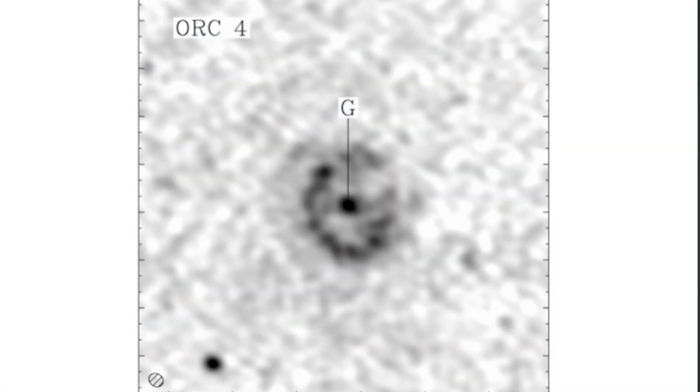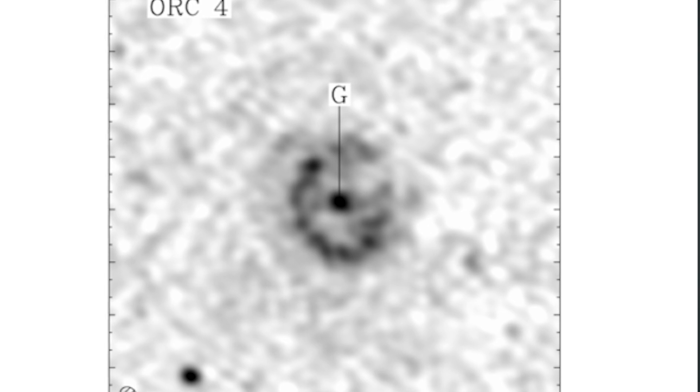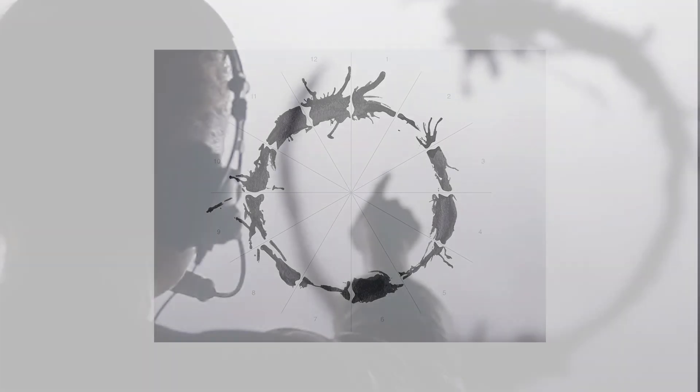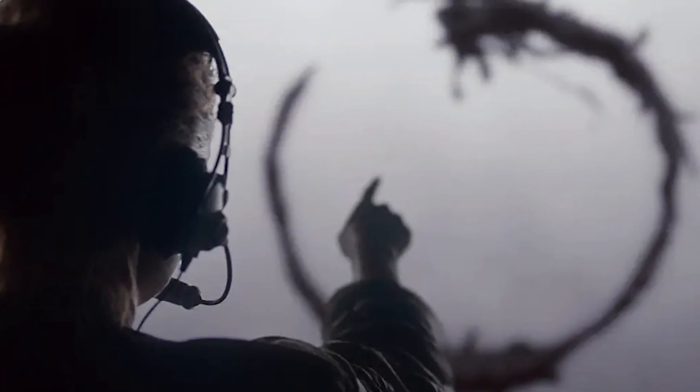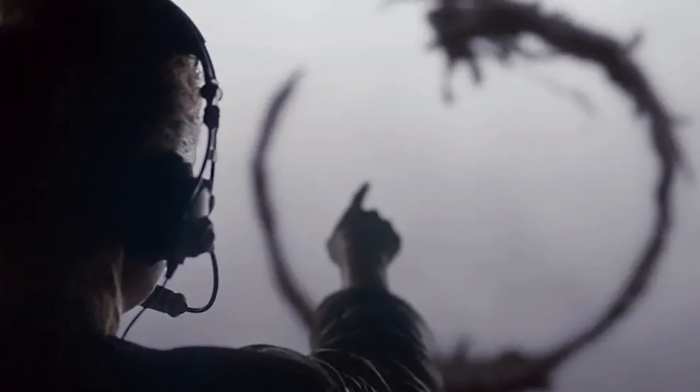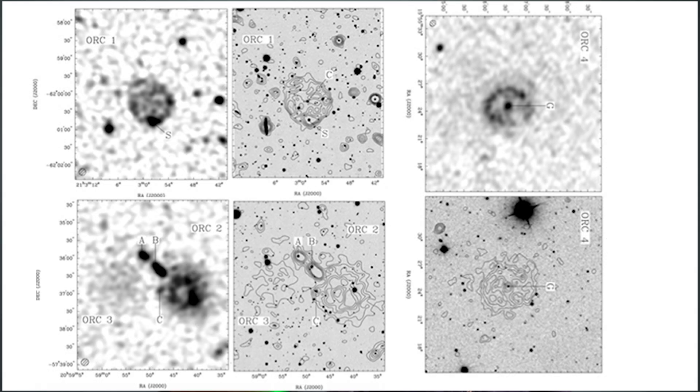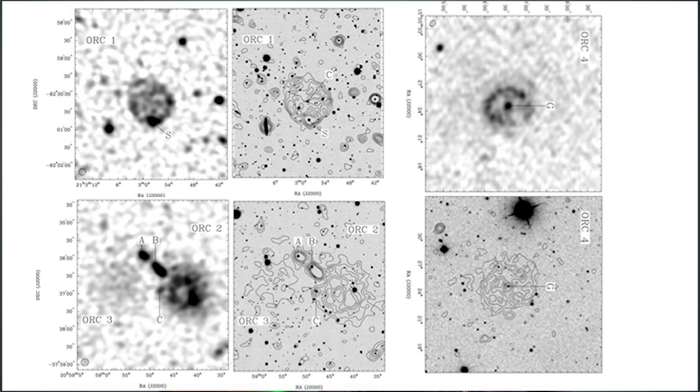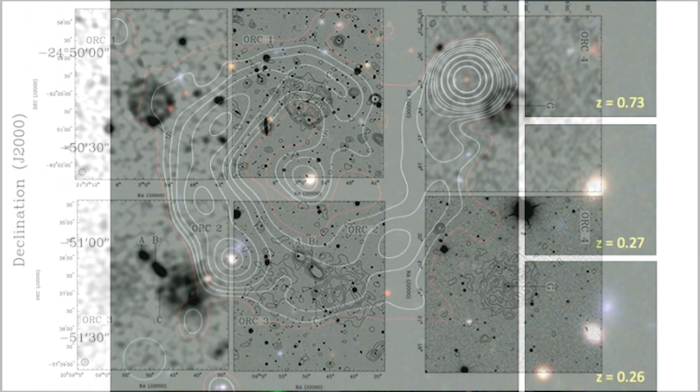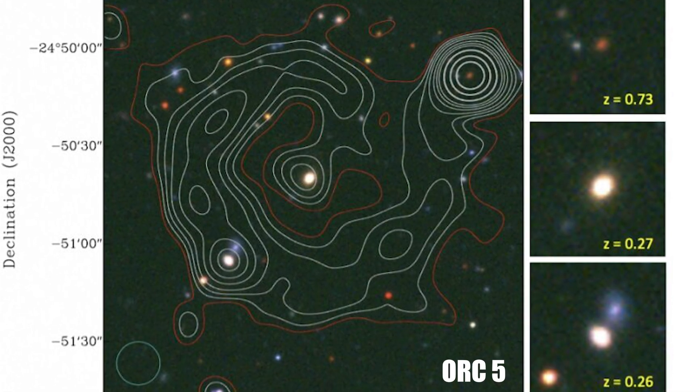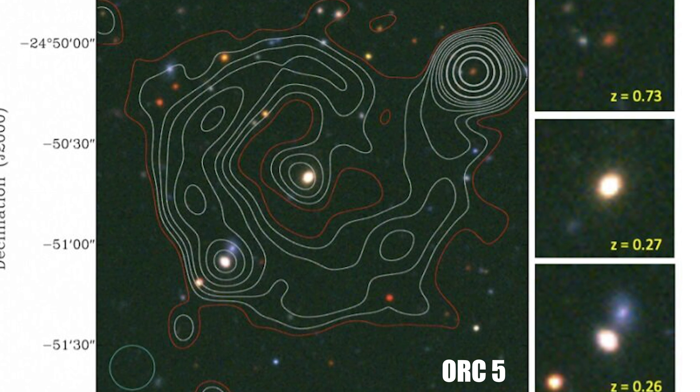Such alien signals may even convey information. I can't help but compare these objects to the alien language from the 2016 film Arrival. Language played a huge role in that film, with the alien language taking a circular shape, strangely similar to these odd radio circles. Like the fictional circular symbols, there may be information encoded within the seemingly random variations in the circle structure.